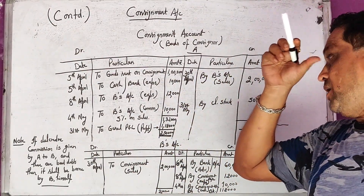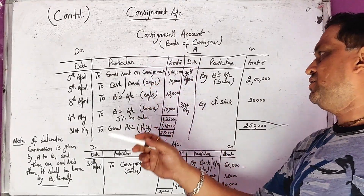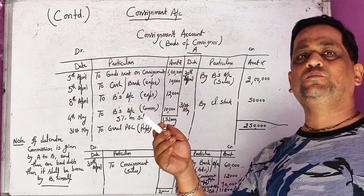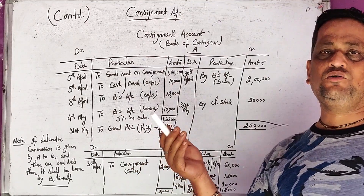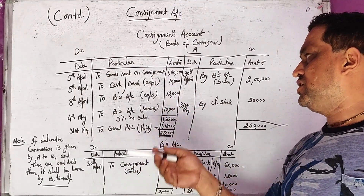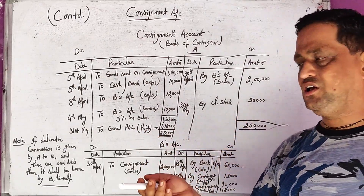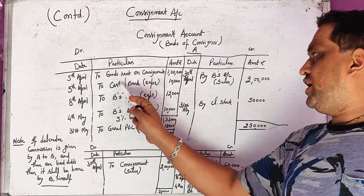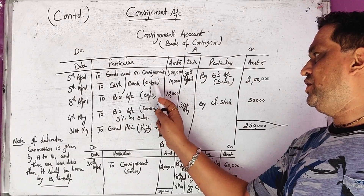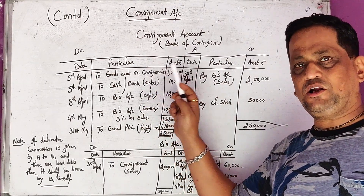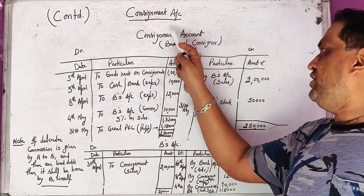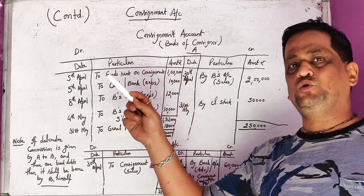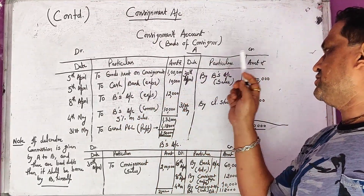After sending the goods, there are transportation expenses. The amount for this transaction is 1,000. The entry was consignment account debited to cash. The consignor has sent goods to Mumbai by railway freight, paying all direct expenses such as transport charges.